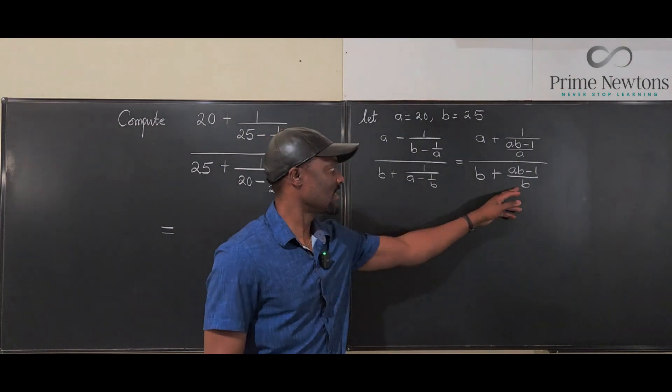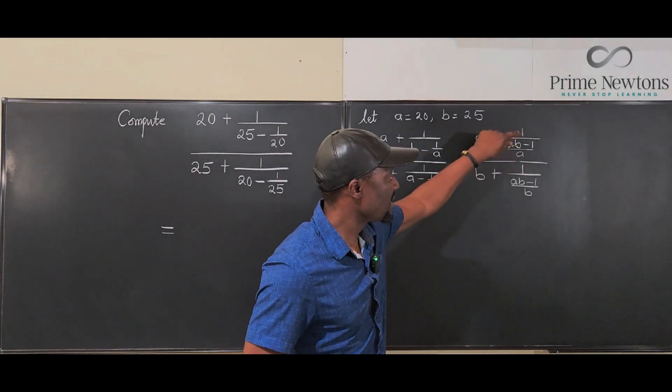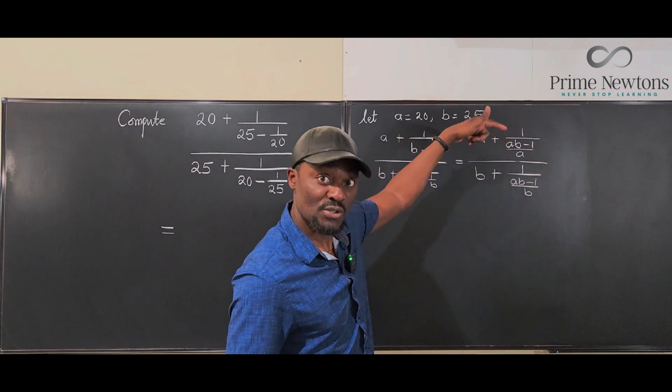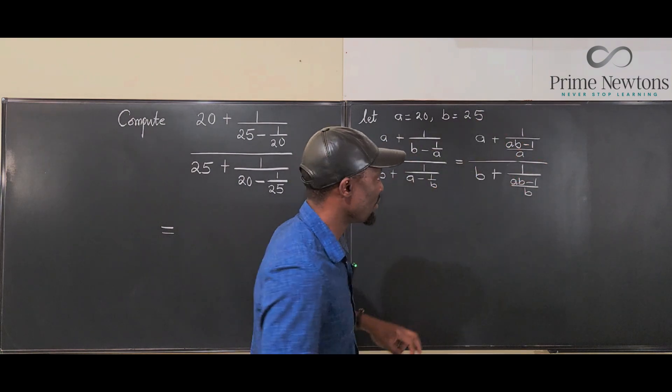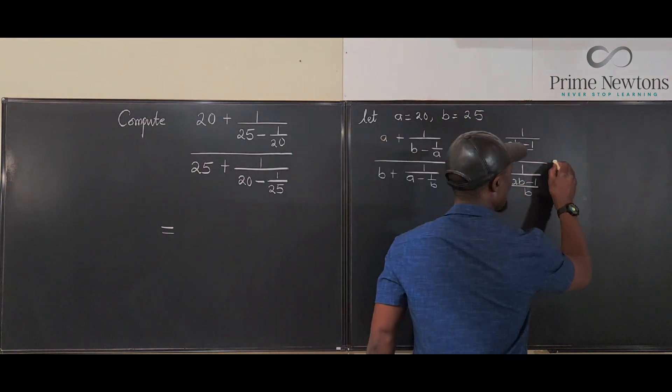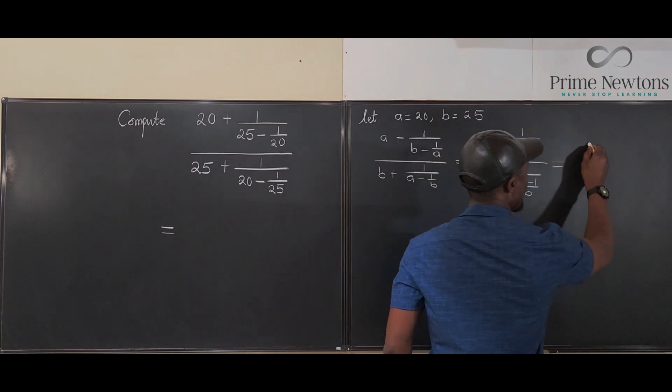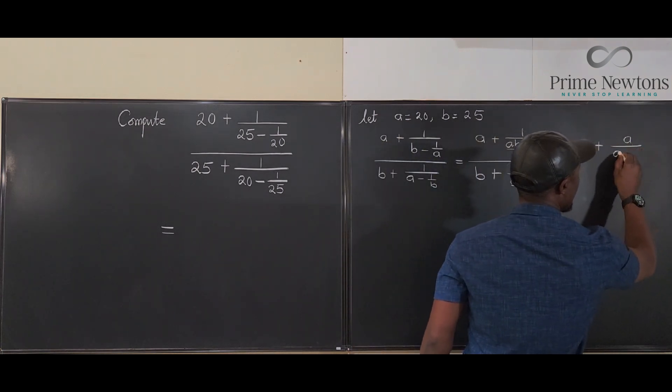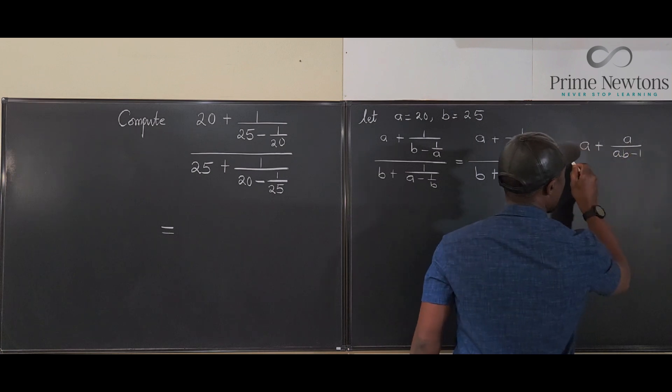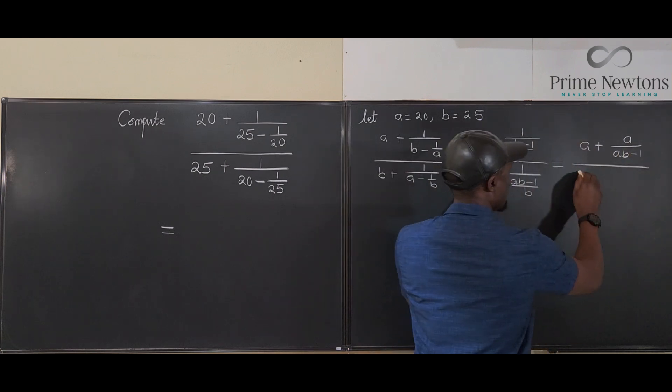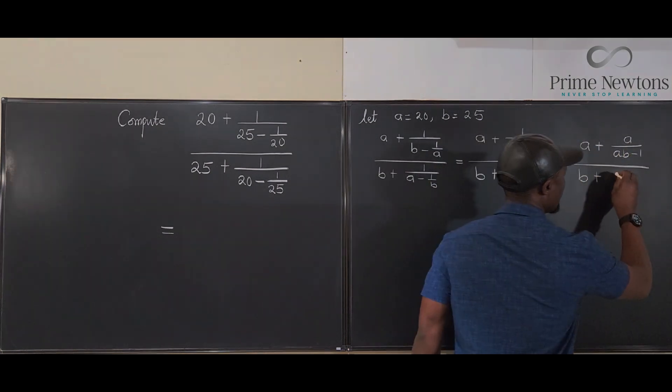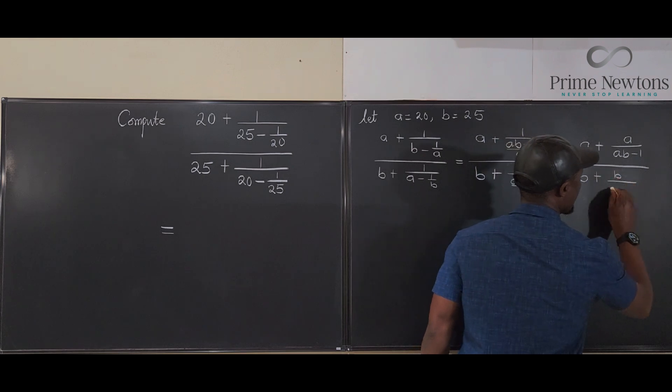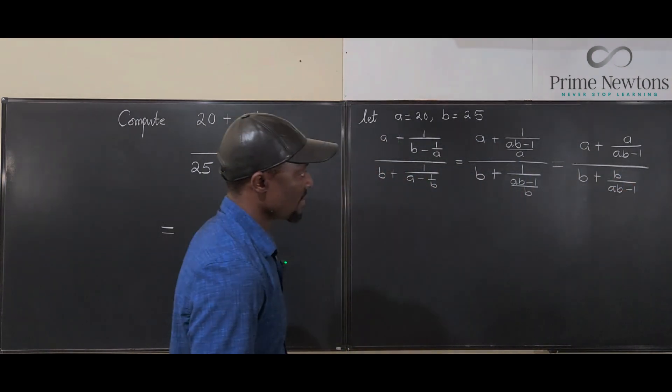Oh, there's 1 over it. We know we can flip this. 1 over a fraction means you should take the reciprocal of that fraction. So what we have is going to be A plus, the flipped fraction is going to be A over AB minus 1. And this is going to be B plus B over AB minus 1.